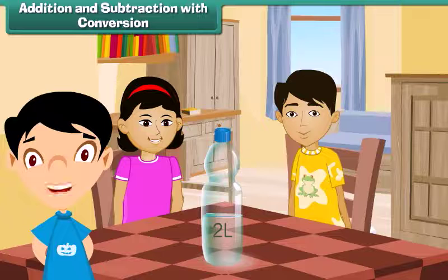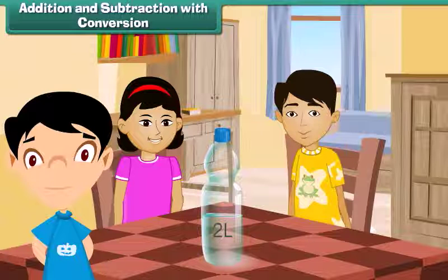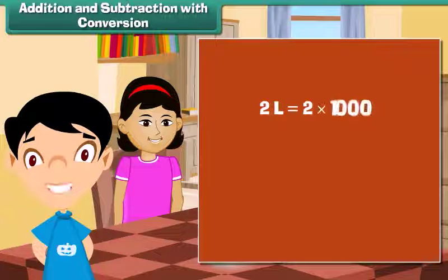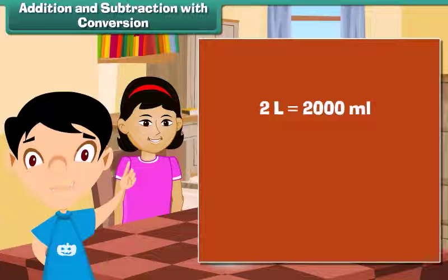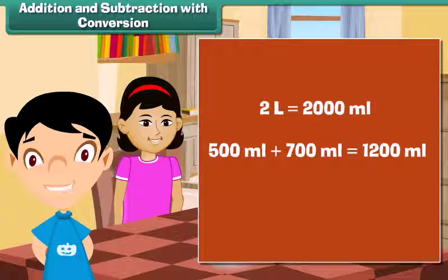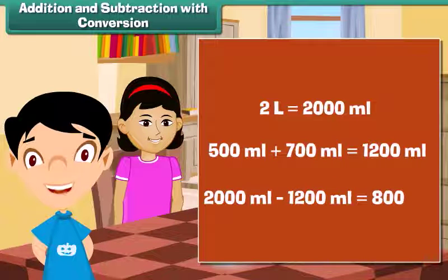Addition and subtraction with conversion: Soha's water bottle holds 2 liters of water. Soha drank 500 milliliters and her friend Govind drank 700 milliliters. The total water in the bottle is 2 liters, which equals 2000 milliliters. Total water consumed is 500 mL plus 700 mL, which is 1200 mL. Water left equals 2000 mL minus 1200 mL, which equals 800 milliliters.